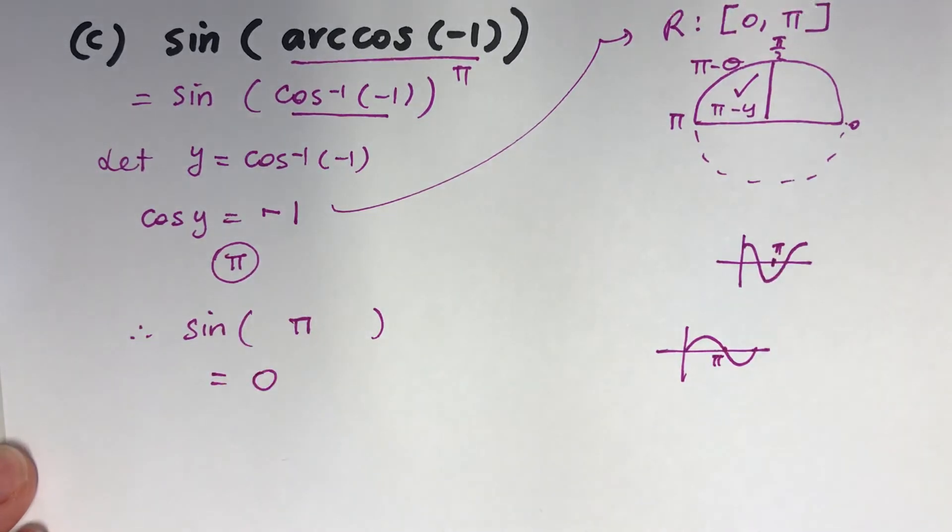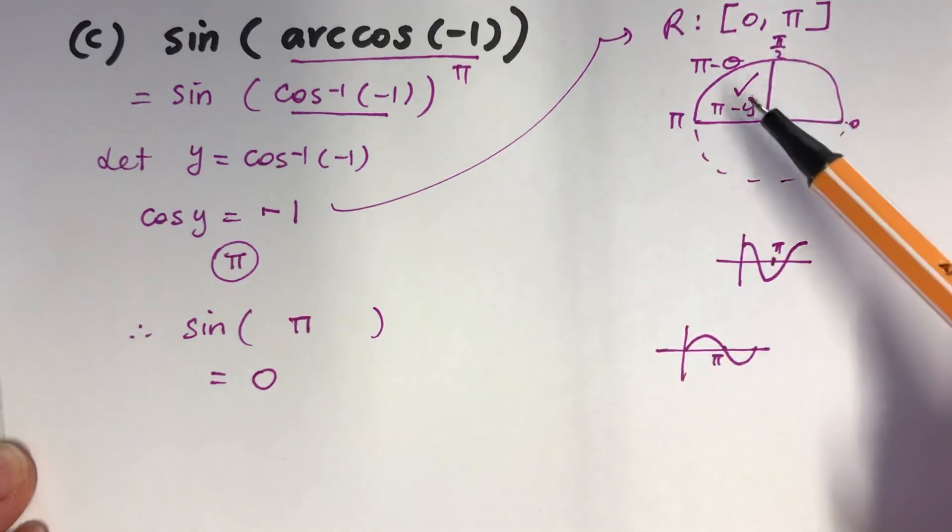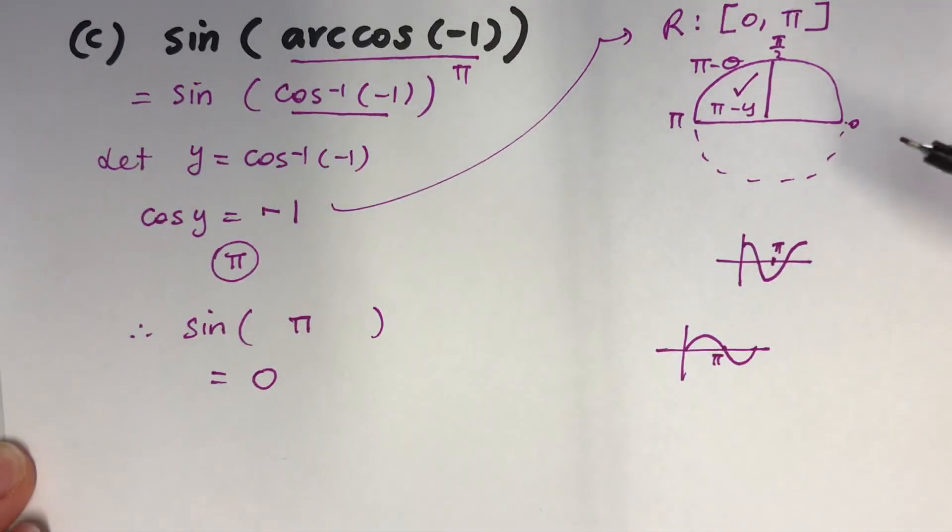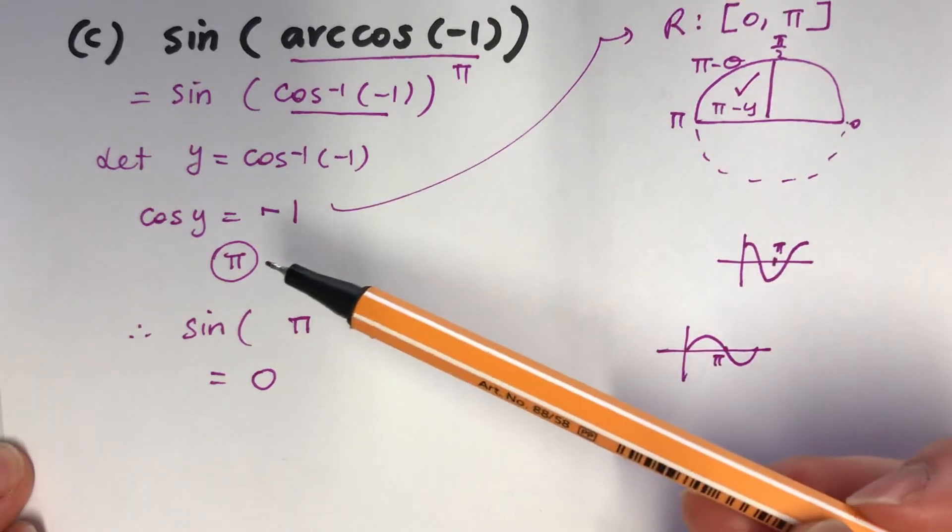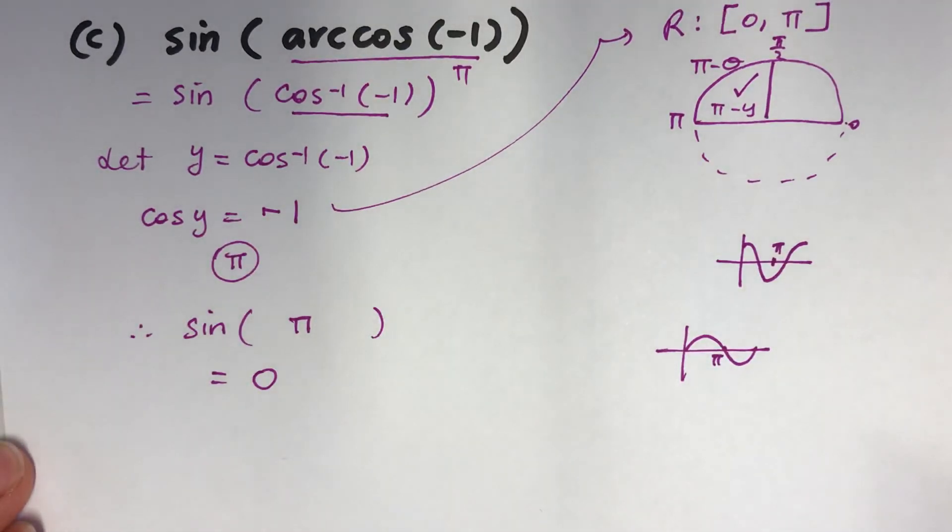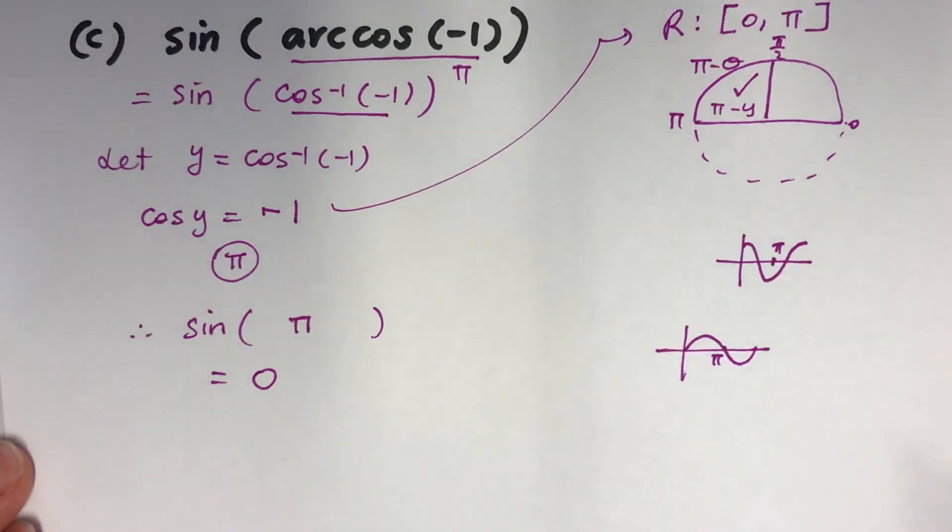And sine pi is 0. So the whole thing will be 0. Let's summarize this. We know that inverse cos, cos sine negative 1 is in the 2nd quadrant, and then cos y is negative 1, which is pi. And so, I'm going to replace that with pi. And the whole thing will be sine pi equals 0.